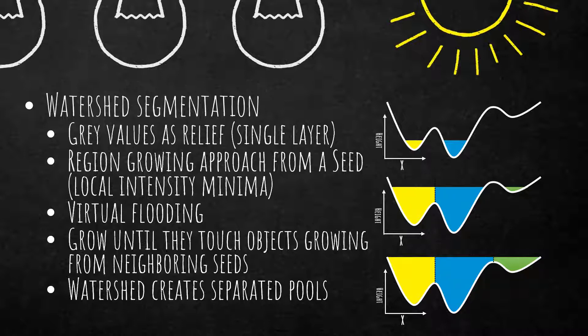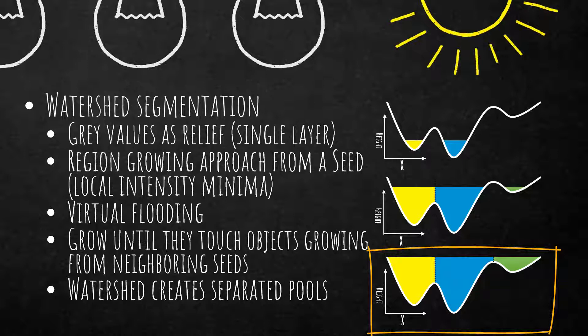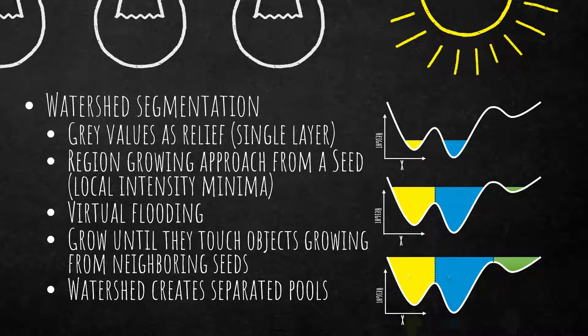What you get in the end is separated pools, as you see on the right. It fills up from the minima and in the example on the right side you finally get three objects. It starts at the bottom of the valleys — if you think about an elevation model — and fills up slowly, keeping the border when it touches another object. The result can look like this. This algorithm is based on a pixel layer, so it works on pixel values, not image object values.